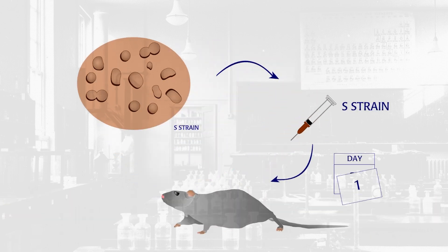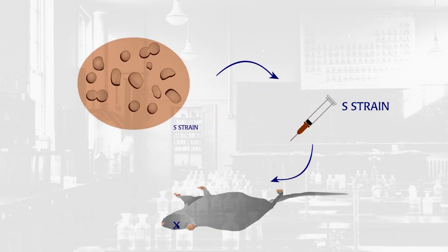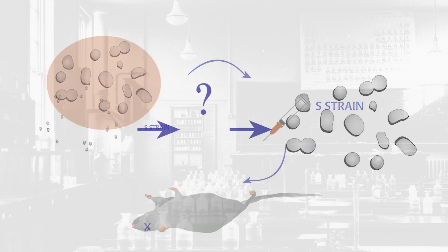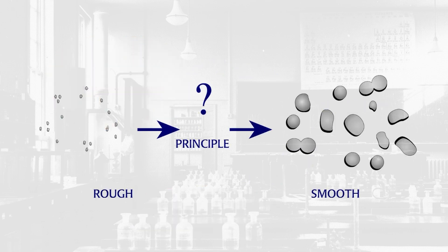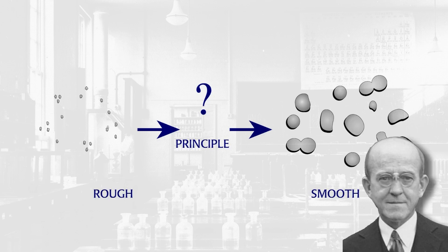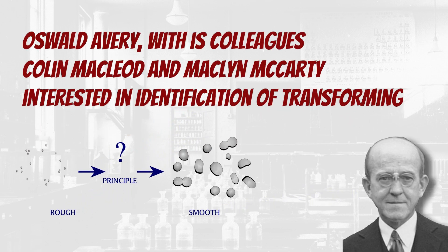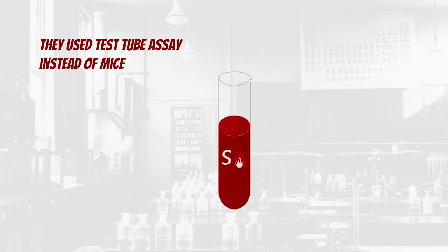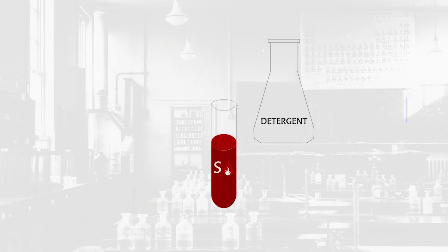Griffith concluded that some principle was transferred from the heat-killed S-strain to the R-strain. The principle transformed the R-strain into the infective S-strain with a smooth coat. Oswald Avery became very interested in the identity of this transforming principle. With his colleagues Colin MacLeod and Maclyn McCarty, they used test tube assays instead of mice.